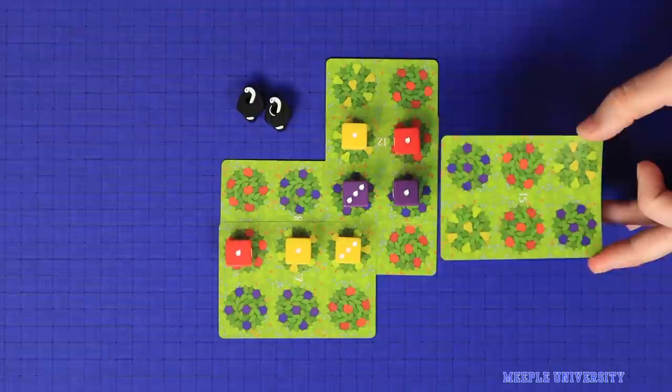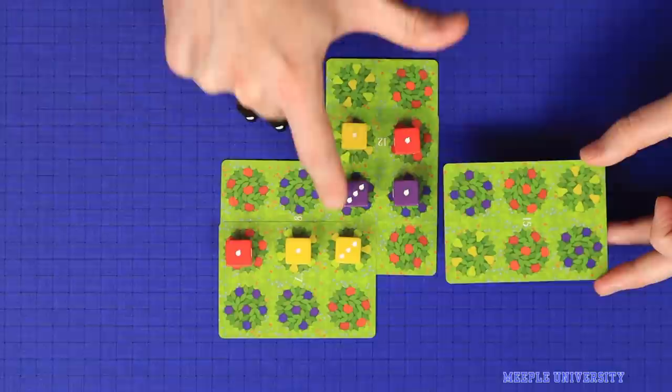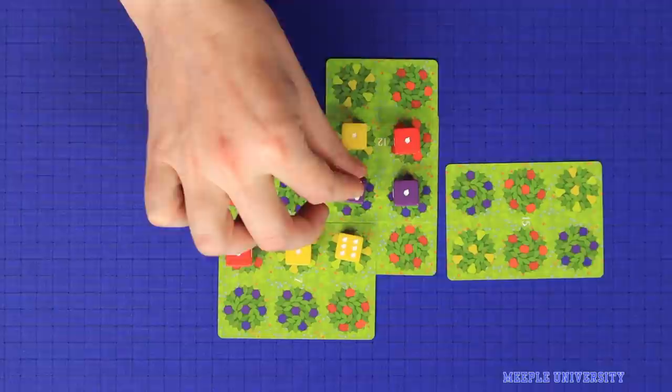However you may break this rule twice per game using the rotten fruit tokens. Suppose I wish to place this card here, which matches with these 3, but not with this one.